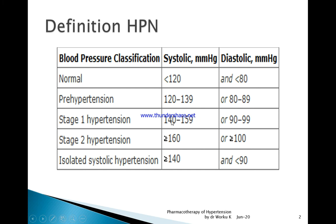Stage 1 hypertension ranges from systolic blood pressure of 140 to 159 and diastolic 90 to 99 mmHg. Stage 2 hypertension is systolic blood pressure greater than or equal to 160 mmHg and diastolic greater than or equal to 100. Isolated systolic hypertension is systolic blood pressure greater than or equal to 140 with diastolic almost in the normal range.